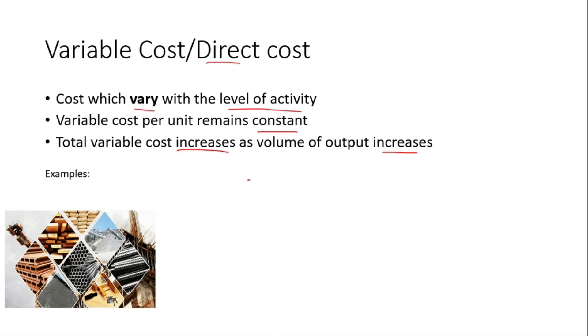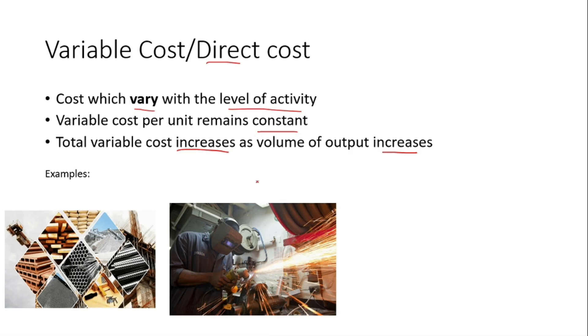As an example it can be direct materials or labour. Let's say we want to know how a variable cost will look like as a diagram. We're going to have an activity on the bottom axis and the cost on the top axis. Variable cost will look like this shape here where the total variable cost increases as volume of output increases.